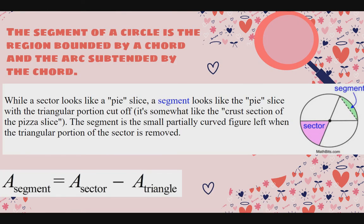Now let's proceed to the segment. While a sector looks like a pie slice, a segment looks like a pie slice with the triangular portion cut off — like a cross section of a pizza crust. The segment is the small, partially curved figure left when the triangular portion of a sector is removed. To find the area of a segment: first find the area of the sector, then find the area of the triangle within that sector, then subtract them to get the difference.